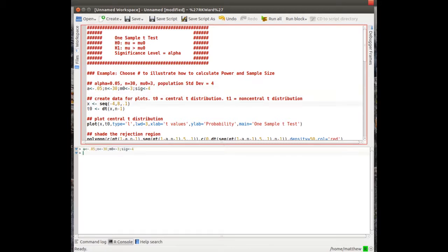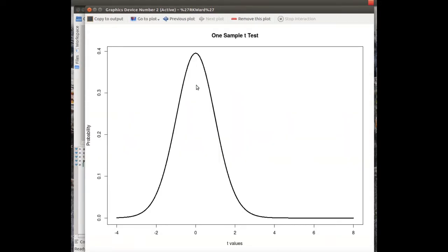We're going to assume the population standard deviation is 4. I want to create some data for the x-axis, transform it to a t, and plot it so we can look at this. This is the t-distribution. It actually goes from negative infinity to positive infinity. I cut it off from -4 to 8.